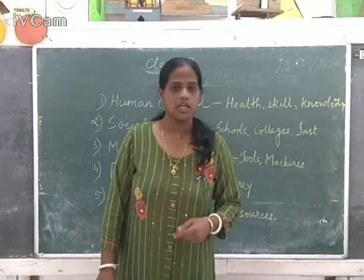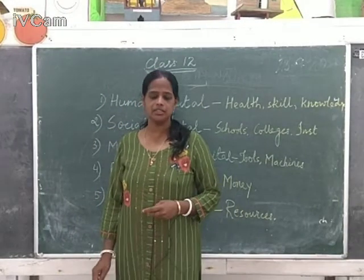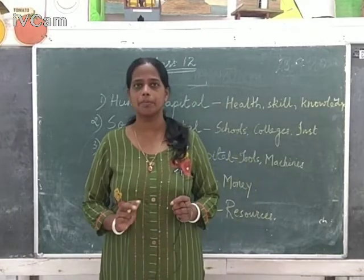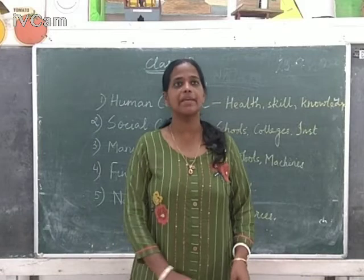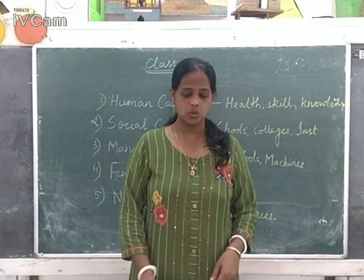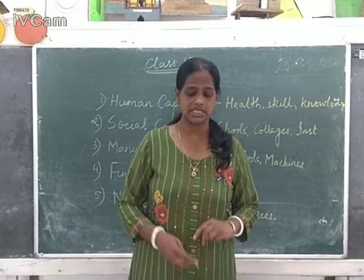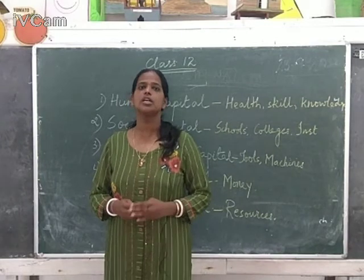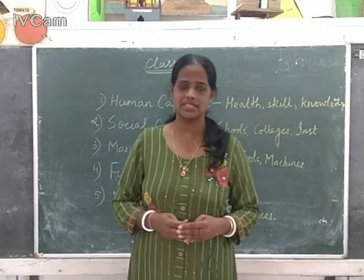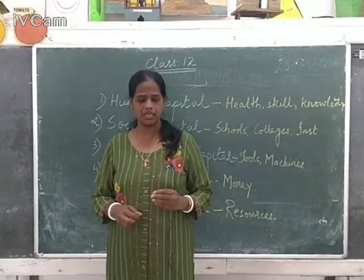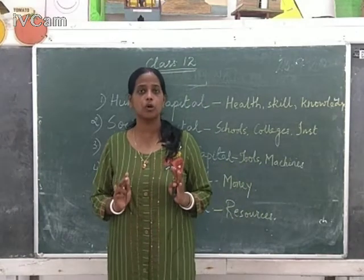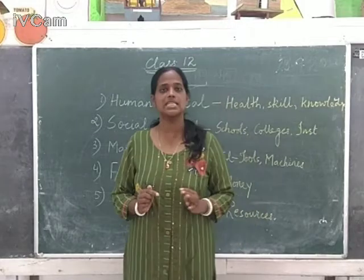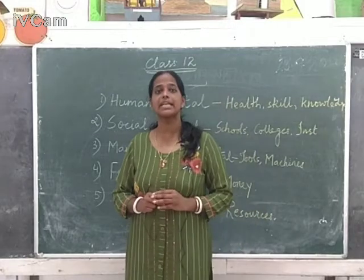Good morning class 12. We are doing chapter 7, section C. The last topic we discussed was cost-benefit analysis — I told you in detail about what it is and the different steps followed. Now we are coming to the next topic, which is the last important topic from this chapter, on page number 128: types of capital.